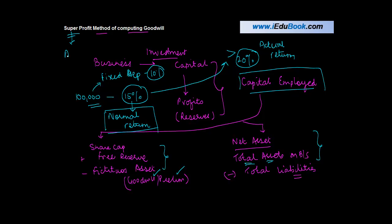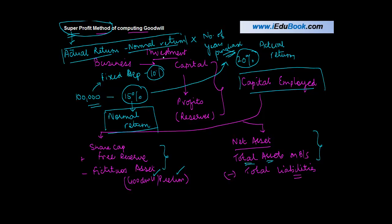And what do you mean by super profit? Super profits are nothing but actual return minus the normal return. Such super profit in the super profit method are then multiplied by the number of years purchase to get the amount of goodwill.